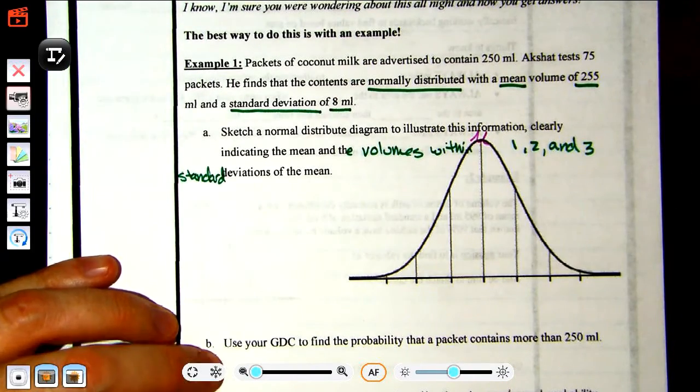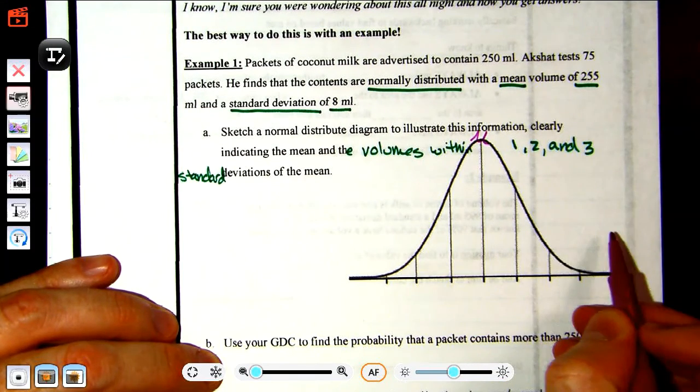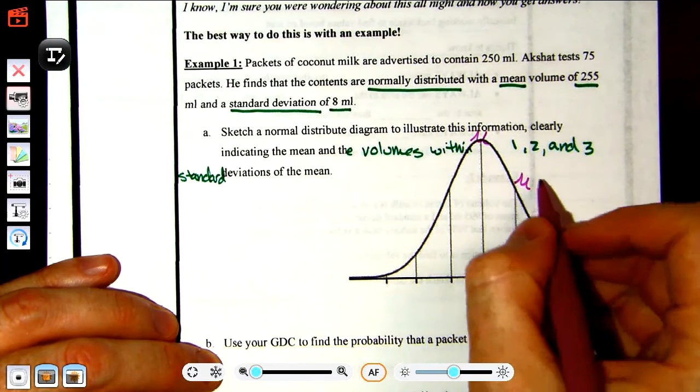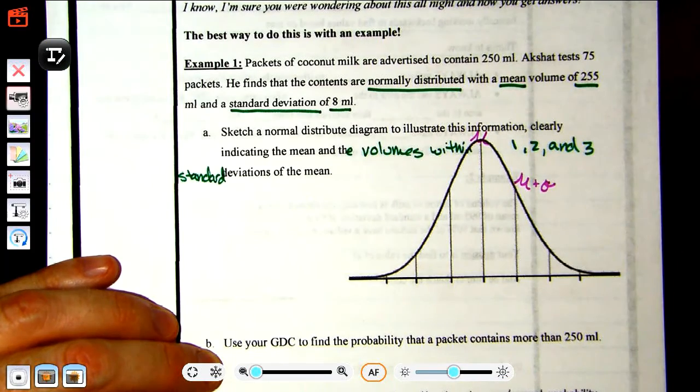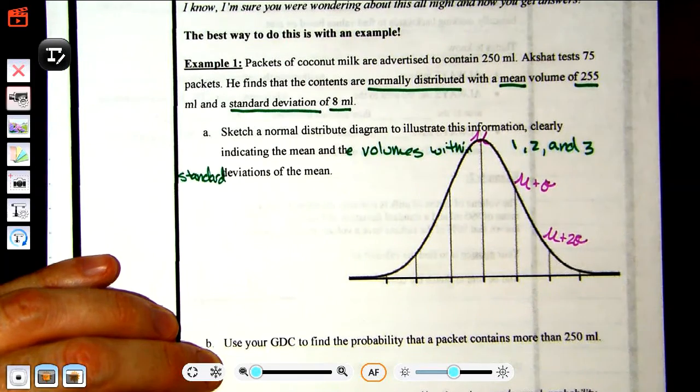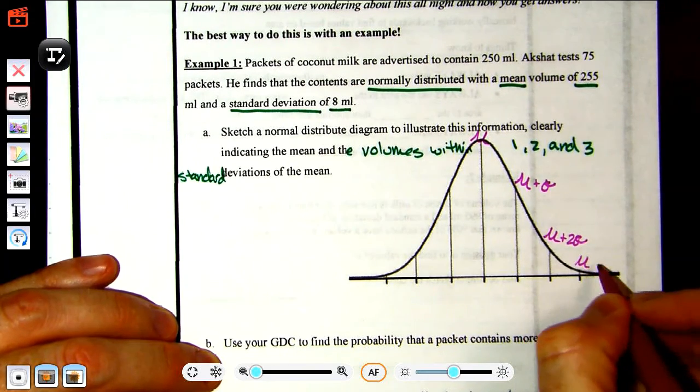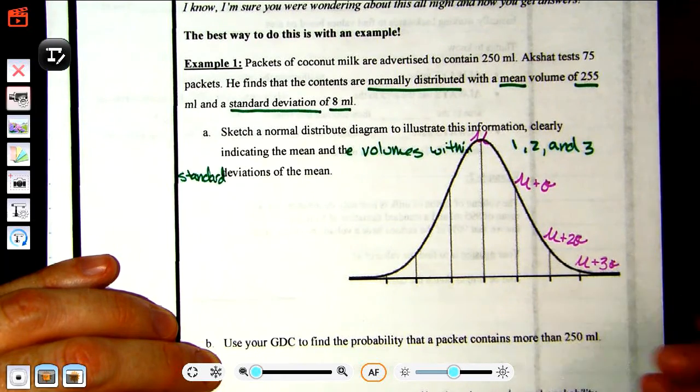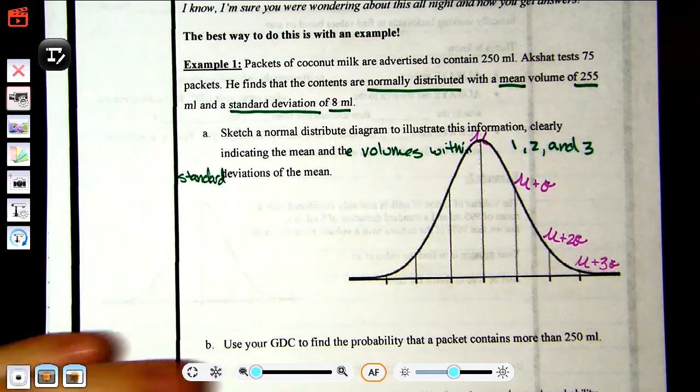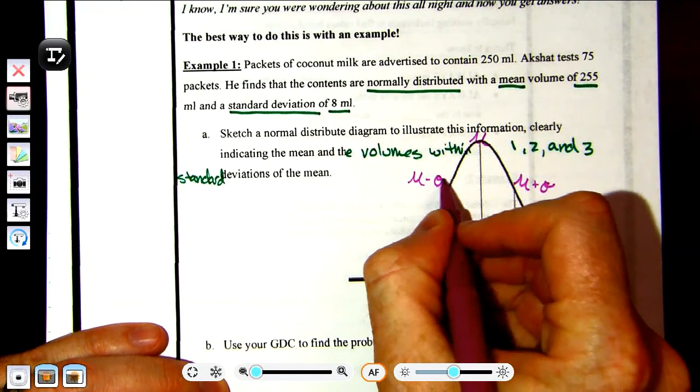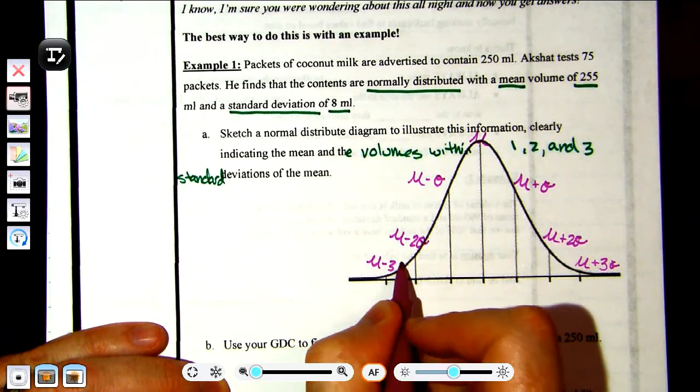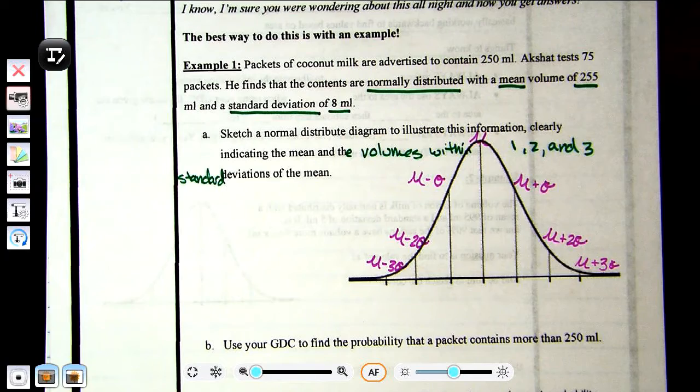Then we're going to continue to add one, two, three standard deviations to the right, so this is mu plus one sigma, mu plus two sigma, mu plus three sigma. And then we need to subtract and go left: mu minus sigma, mu minus two sigma, and mu minus three sigma.